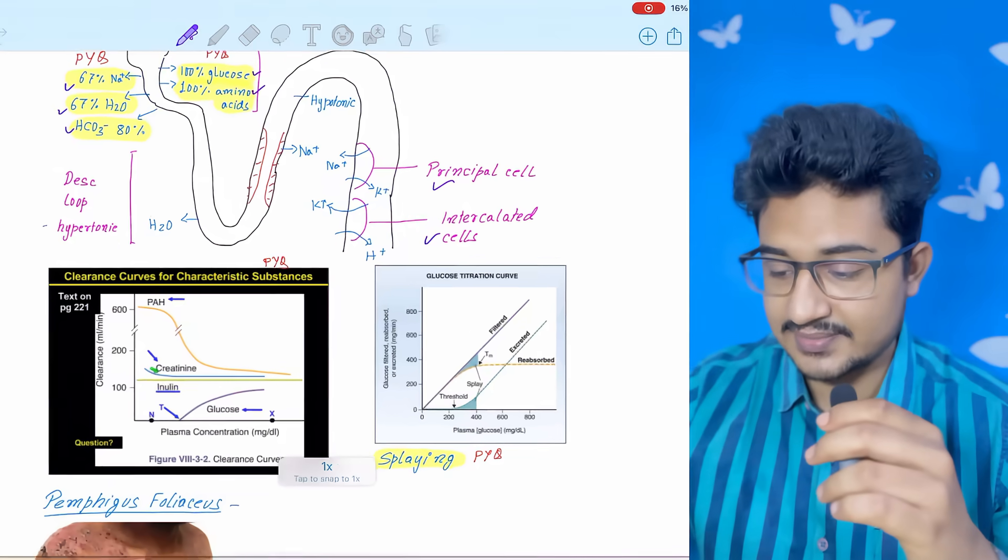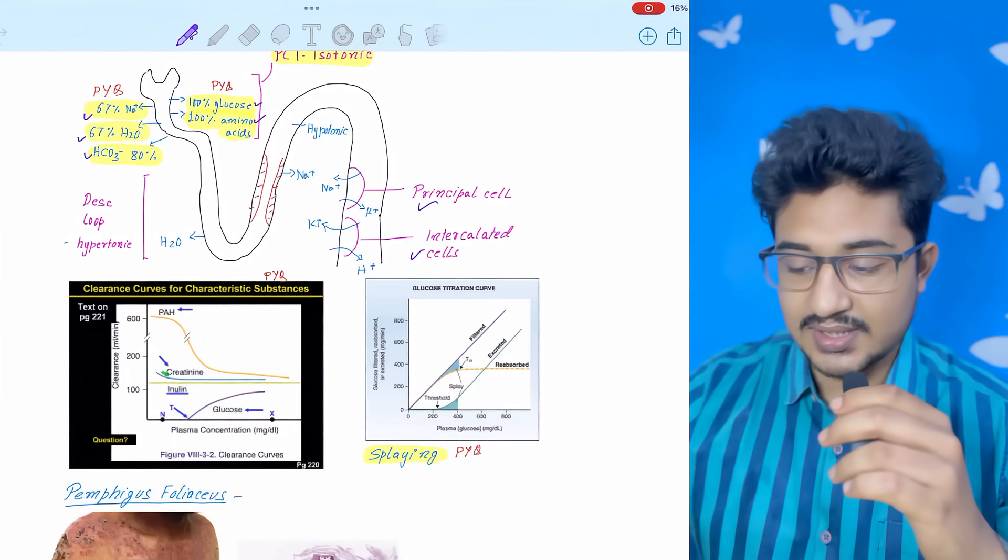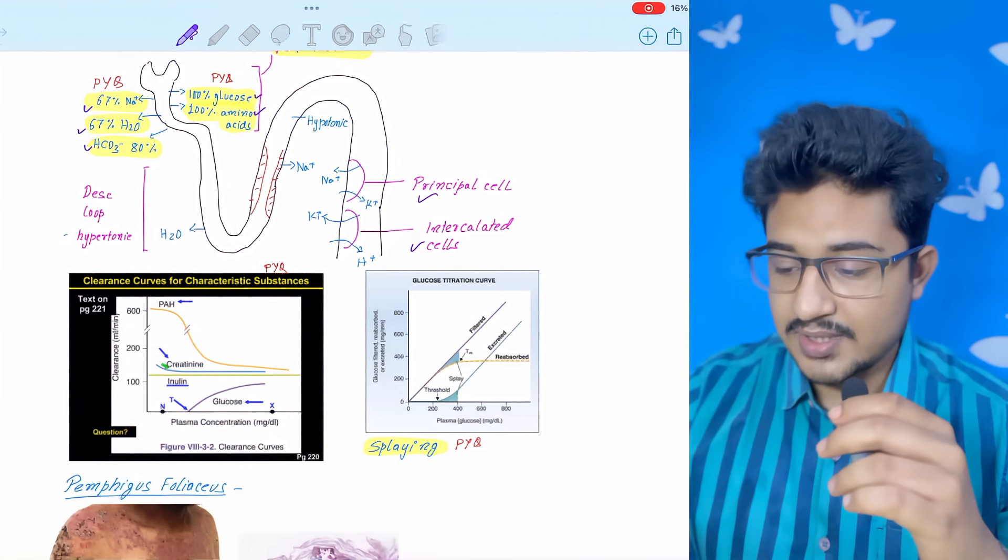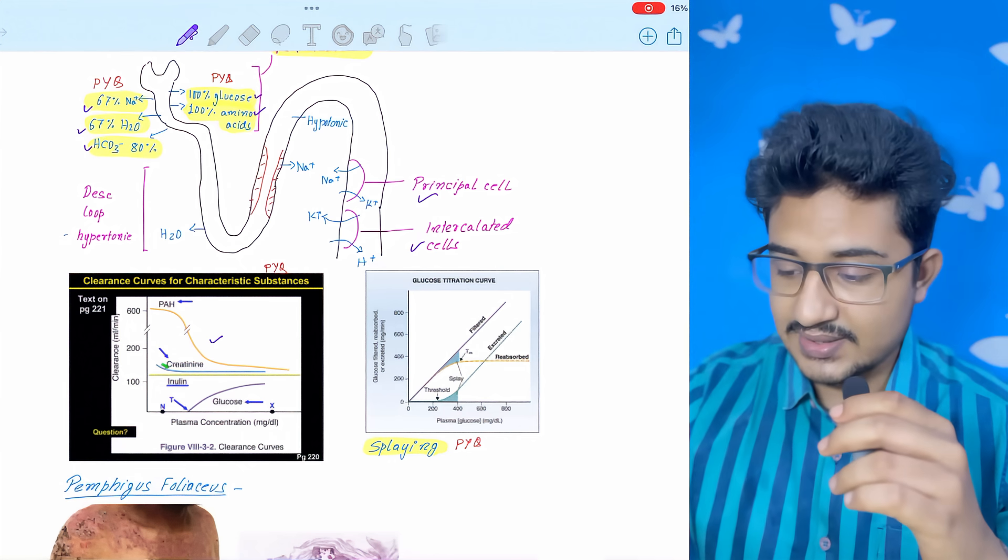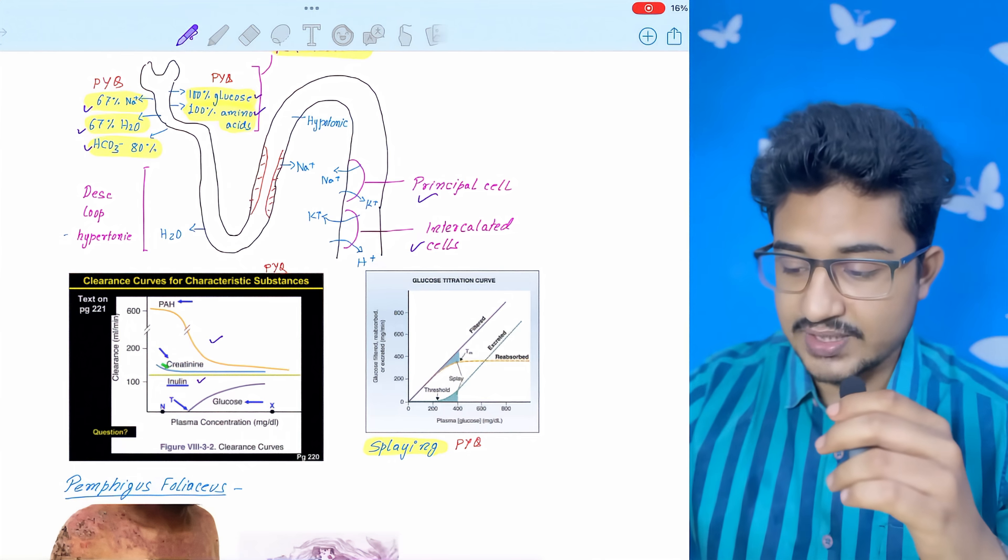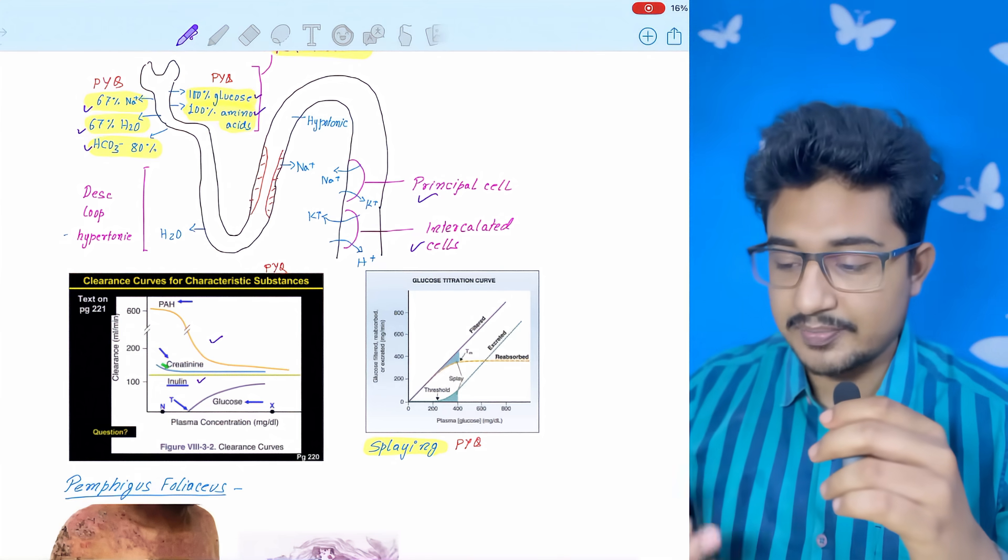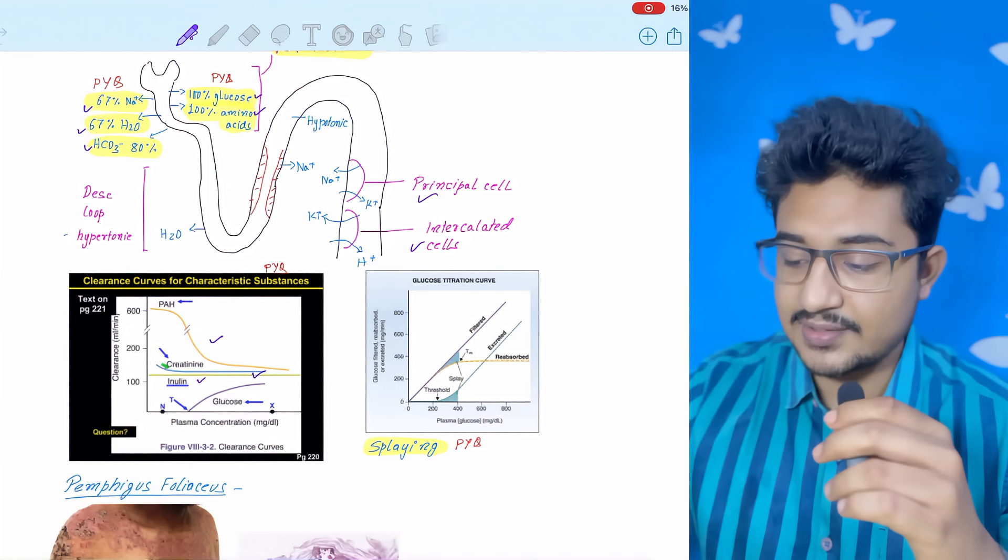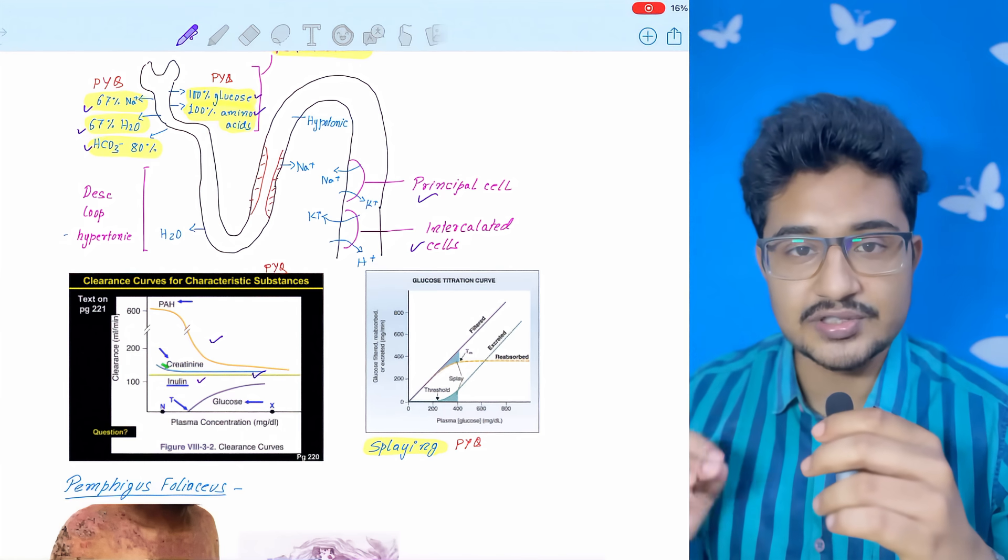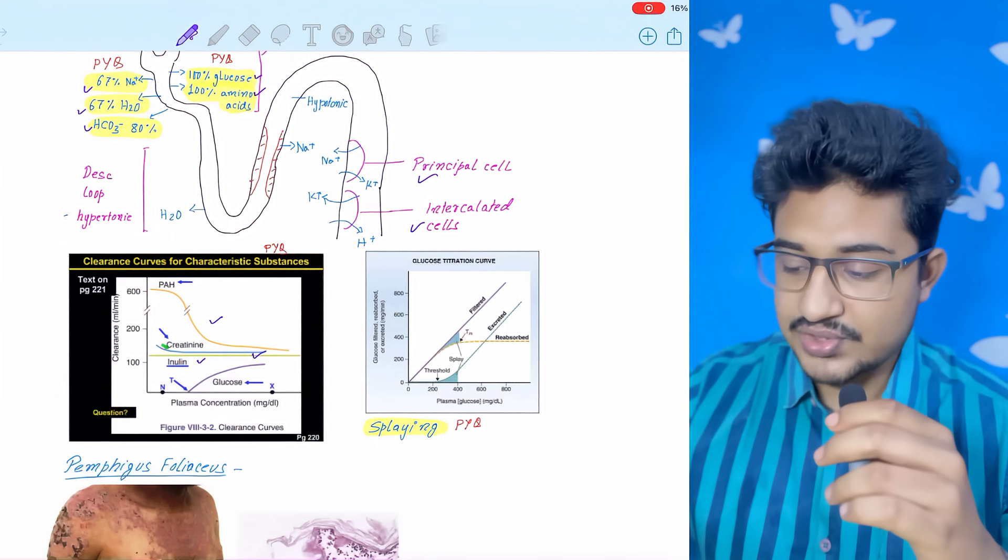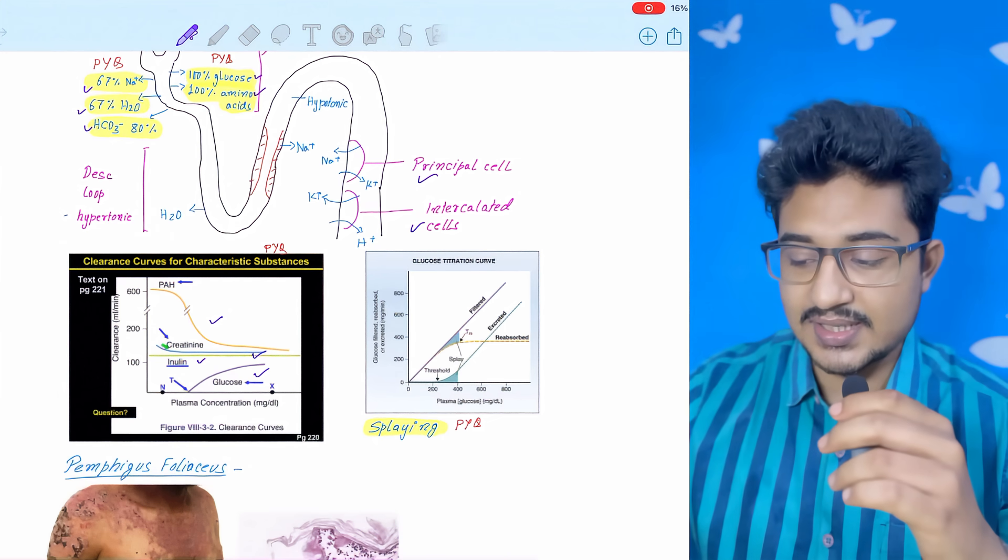Next is the clearance graph, which was also asked in NEET PG. PAH is simply excreted, so you can see the level is more than that of inulin. Inulin is best for estimation of GFR, but since humans excrete creatinine normally, creatinine is the most commonly studied parameter for GFR.